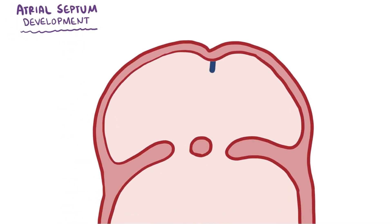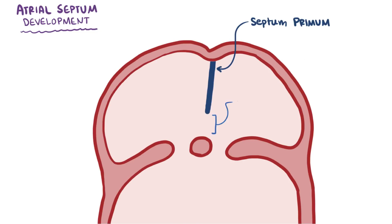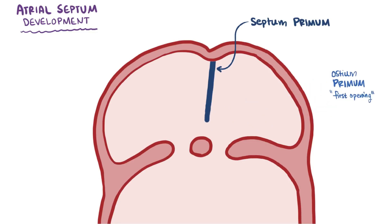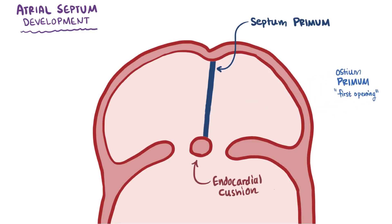When the heart's first developing, a tissue called the septum primum between the left and the right atria grows downward, slowly creating two separate chambers by closing this gap, or ostium primum, which means the first opening. This septum primum then fuses with the endocardial cushion and closes the gap completely. Meanwhile, a hole appears in the upper area called the ostium secundum, or second opening.